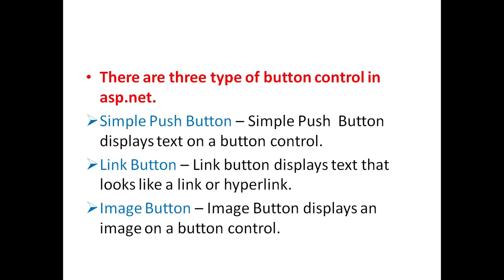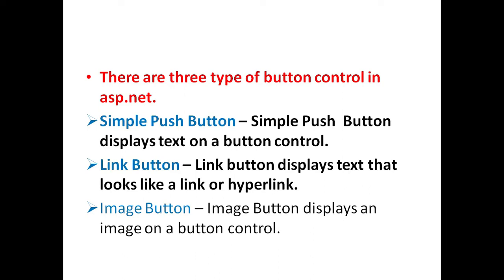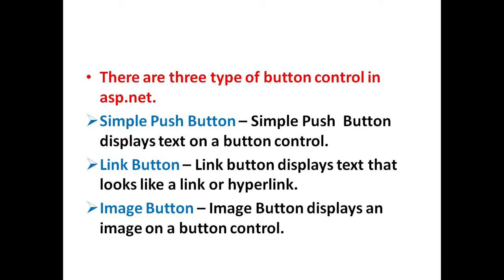There are three types of button control in ASP.NET. First is the simple push button, which displays text on a button control. Link button displays text that looks like a link or hyperlink. And image button displays an image on a button control.